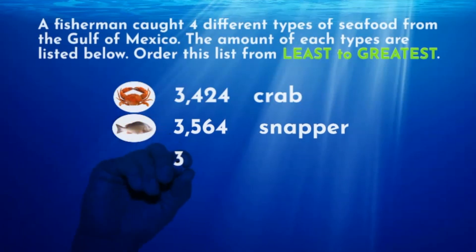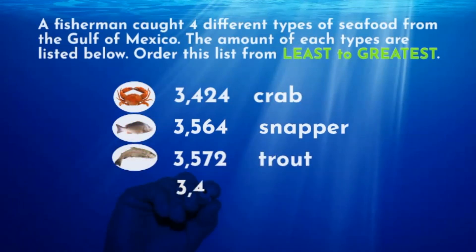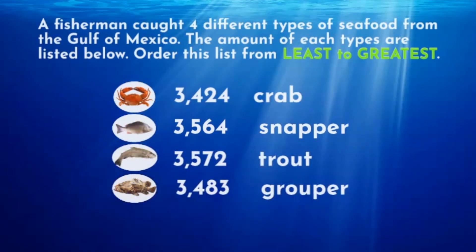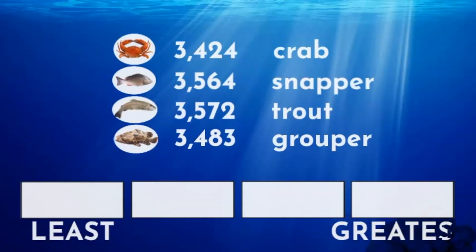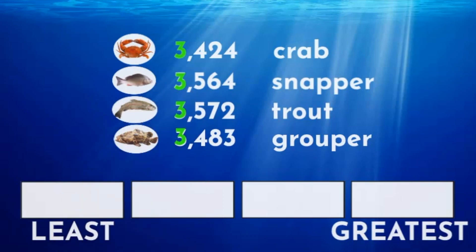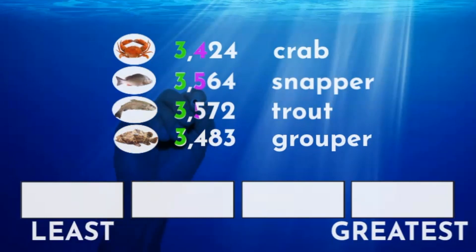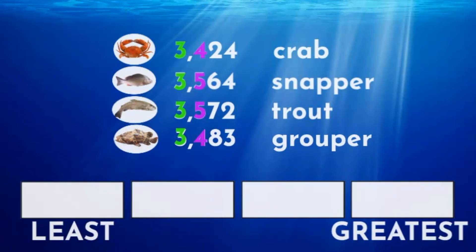We need to take a close look at our list to first find the catch with the least amount. We always start with the digits with the highest value when comparing numbers. Notice all of these numbers have a three in the thousands place — they all have an equal amount of thousands. This means we need to look at the next digit in the hundreds place for each number.